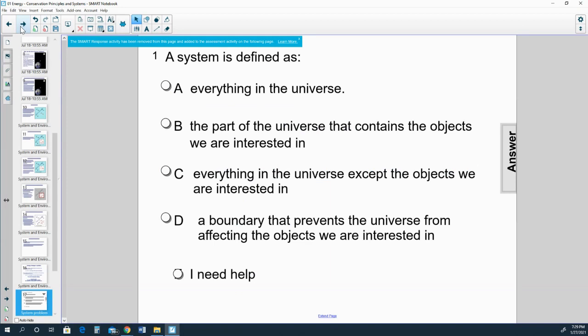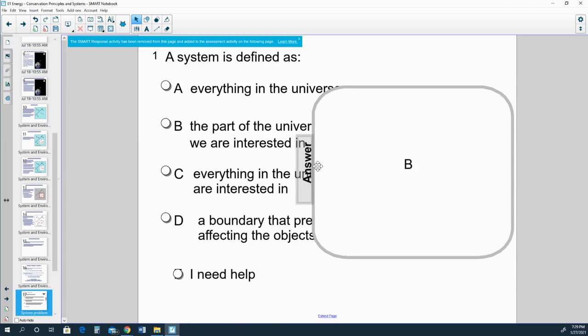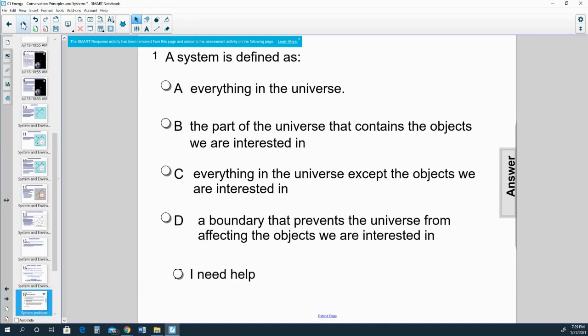Let's try a couple practice problems for the information you just heard. A system is defined as... The correct answer is B, the part of the universe that contains the objects we are interested in.